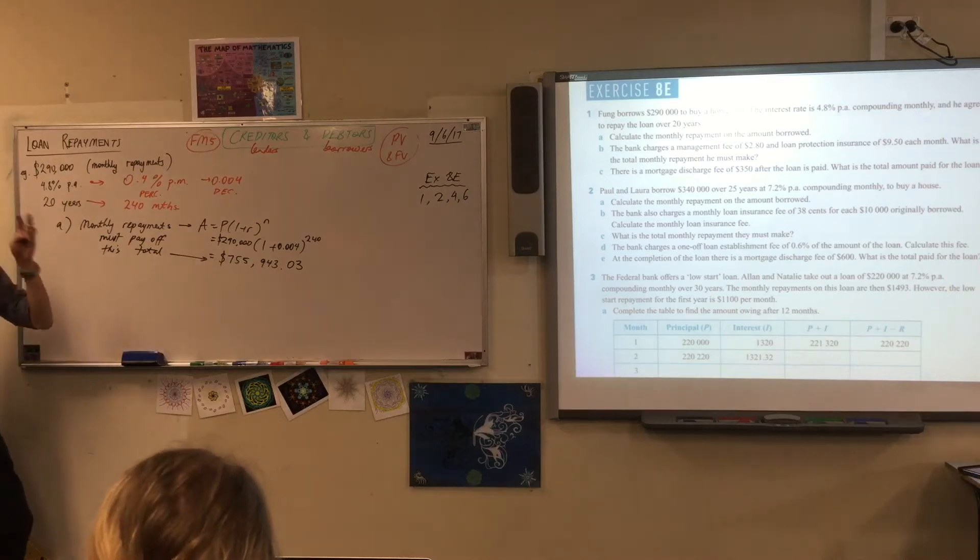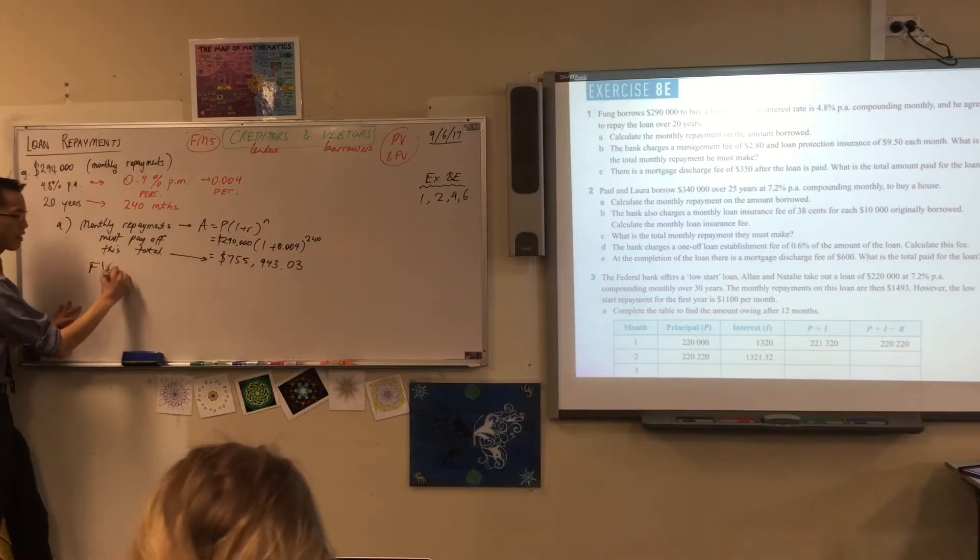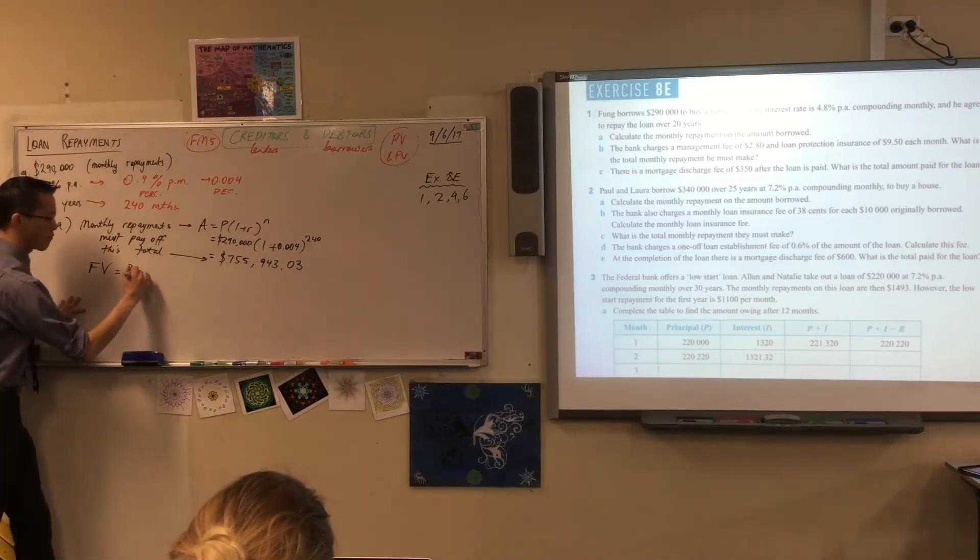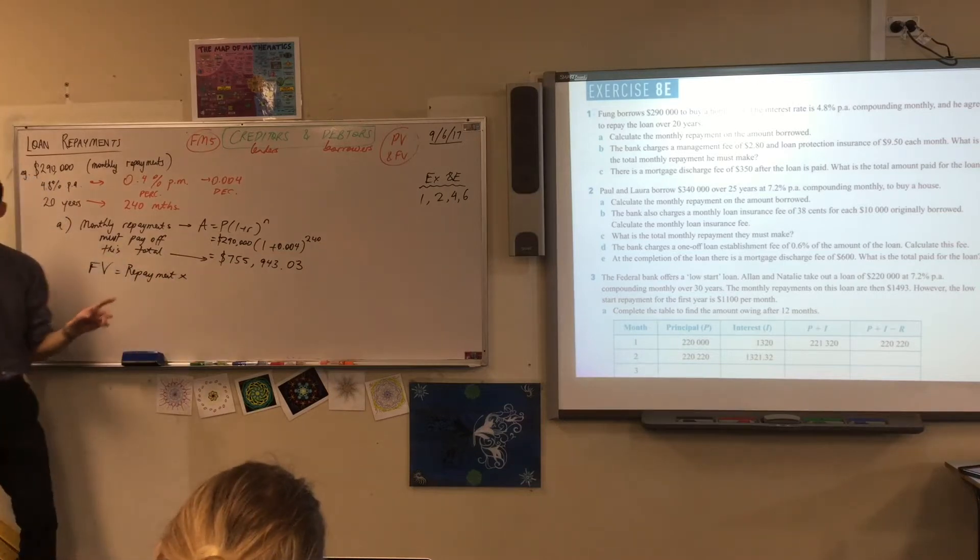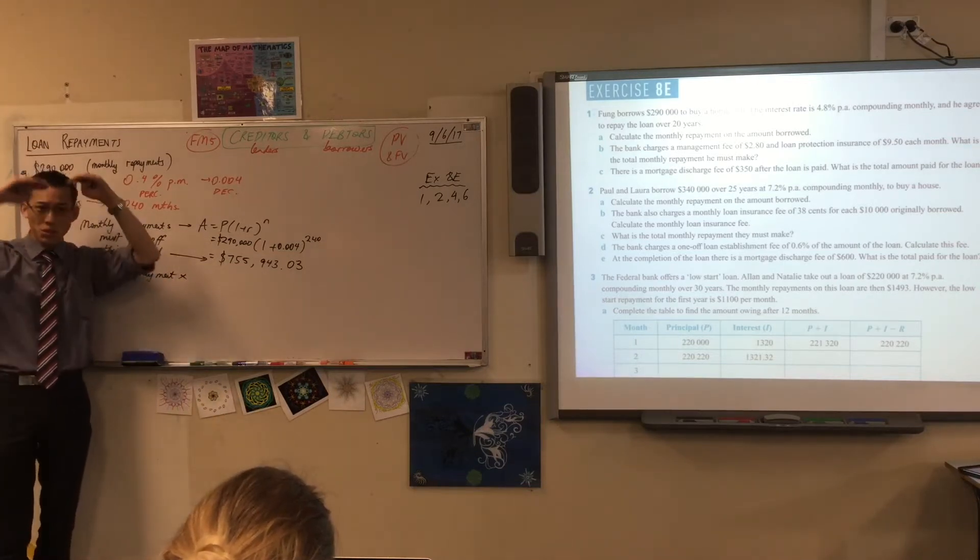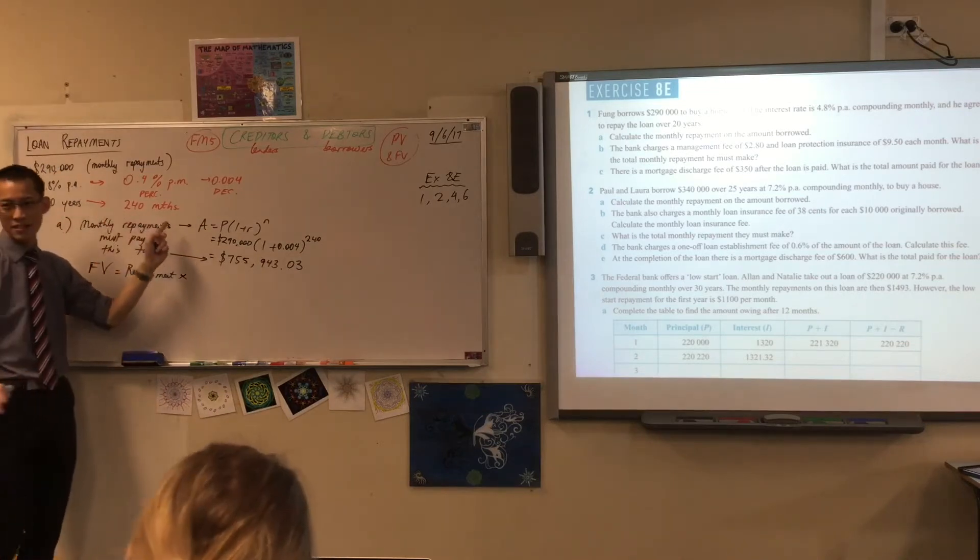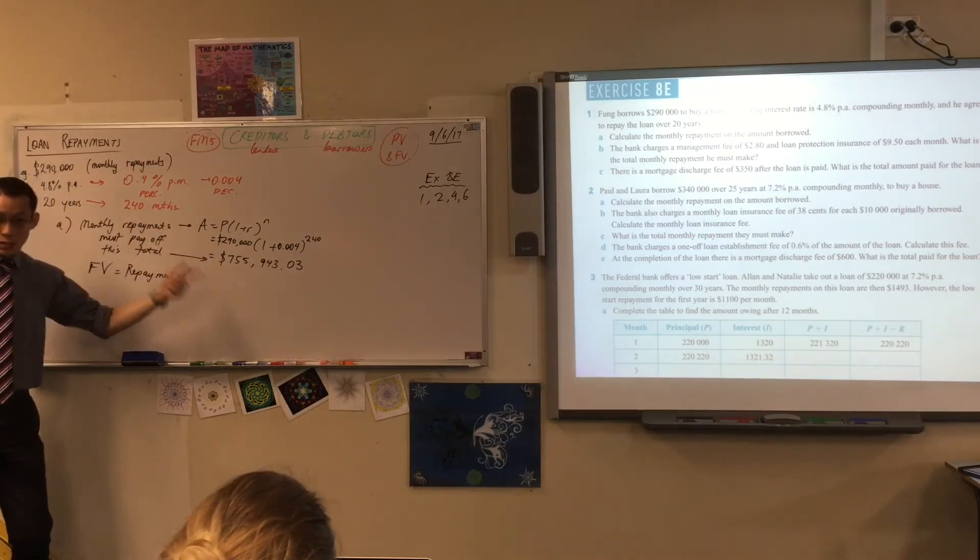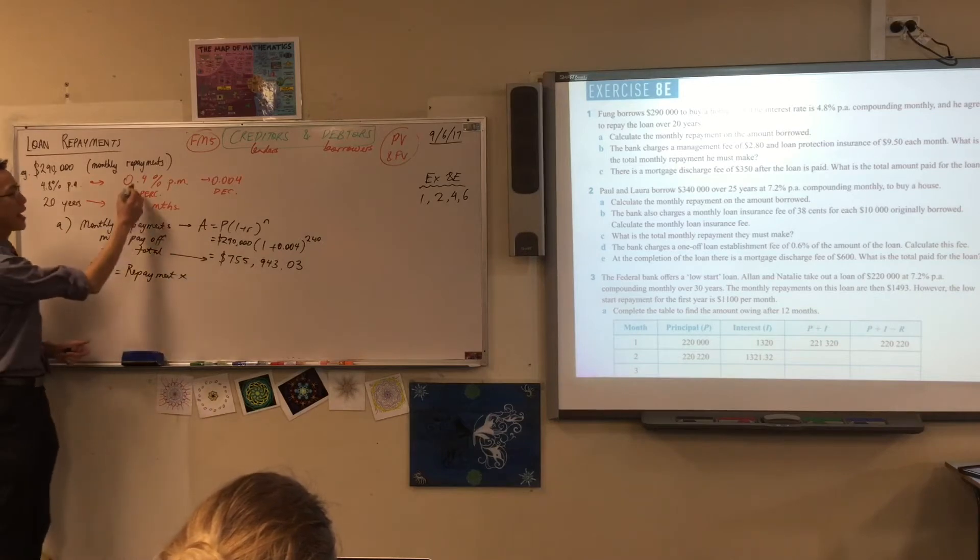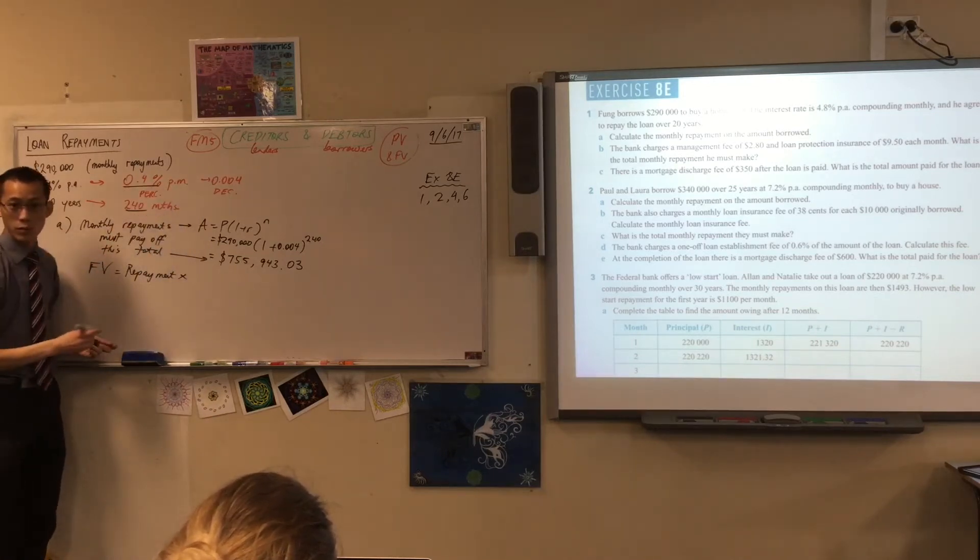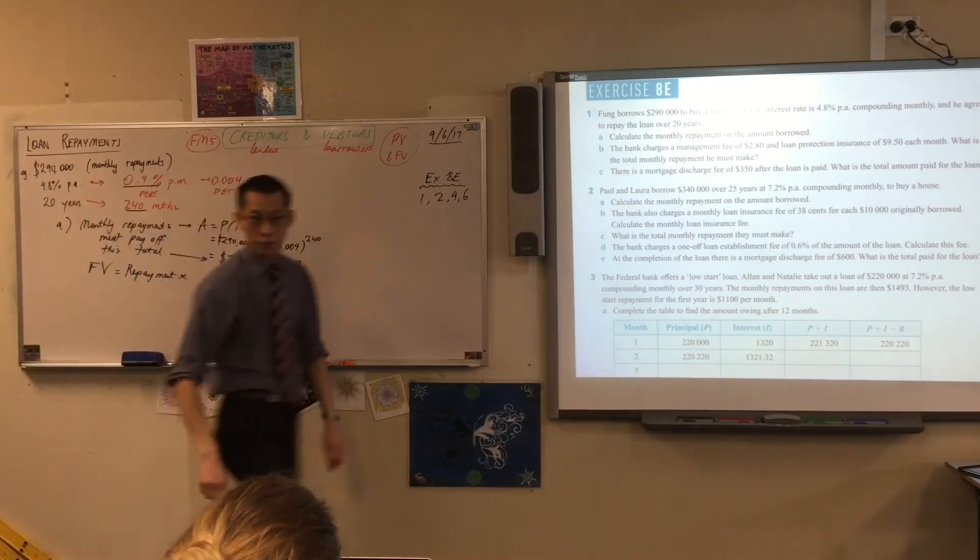So now I can go ahead and use my future value idea. I can say the future value will be equal to some repayment times, and we have tables for this. Remember, it took us ages to do it line by line, especially if there's 240 lines. That doesn't sound like fun. But that's why we have these tables. We've calculated the numbers that are going to be useful to us. So now, go to your future value table.